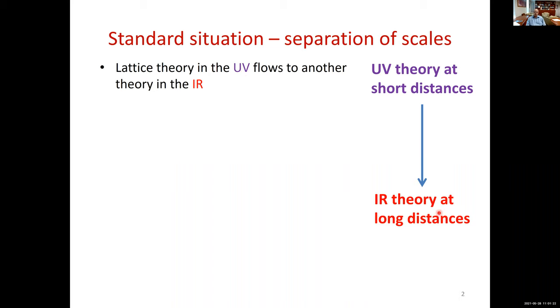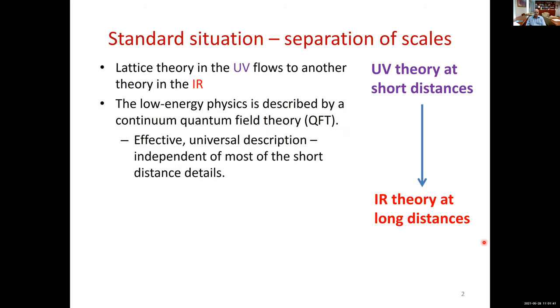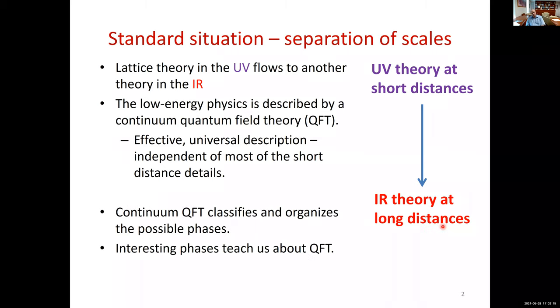Here we start from some system. In the context of lattice models, it's a system in the UV at short distances, some lattice system, and it flows at long distances to a long distance infrared theory. This theory is very interesting because it's complete on its own and almost independent of most of the details of the short distance theory. This has been enormously powerful.